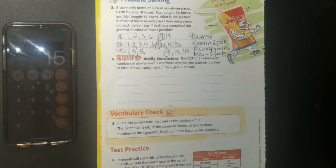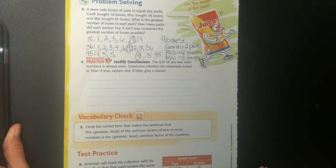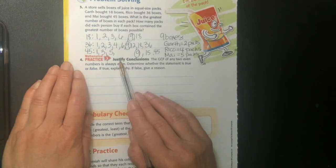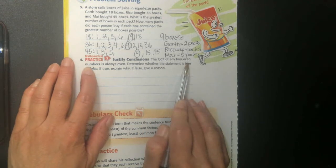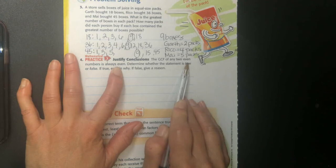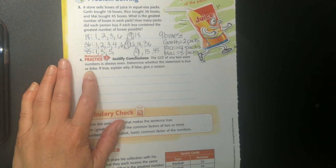Then you can just show the rest, the answers, so they can see the answers. So here is to justify conclusions. Here it says, the greatest common factor of any two even numbers is always even. Determine whether this statement is true or false. If true, explain why.